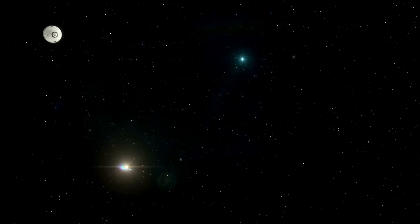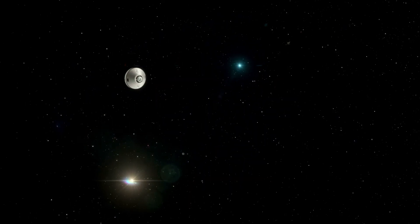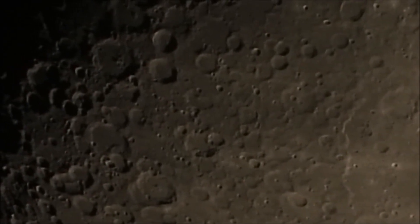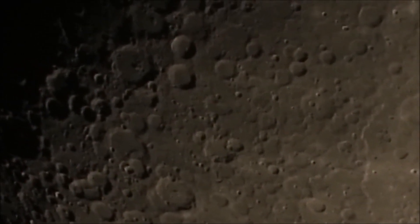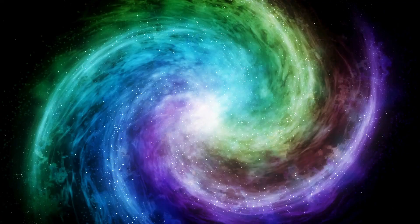By focusing on Proxima Centauri b, the closest exoplanet to Earth, the telescope revealed the presence of unusual bright lights emanating from its surface. What could be the cause of these unusual lights on Proxima Centauri b? Could they indicate the existence of life beyond our own planet?